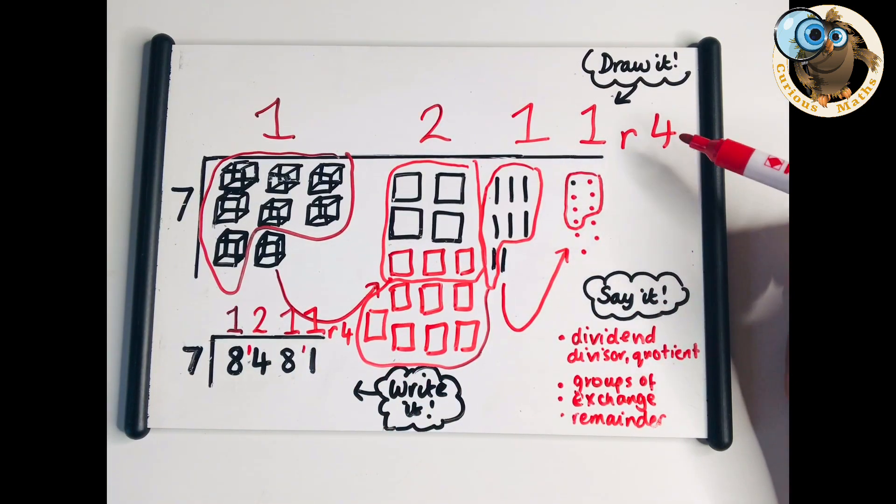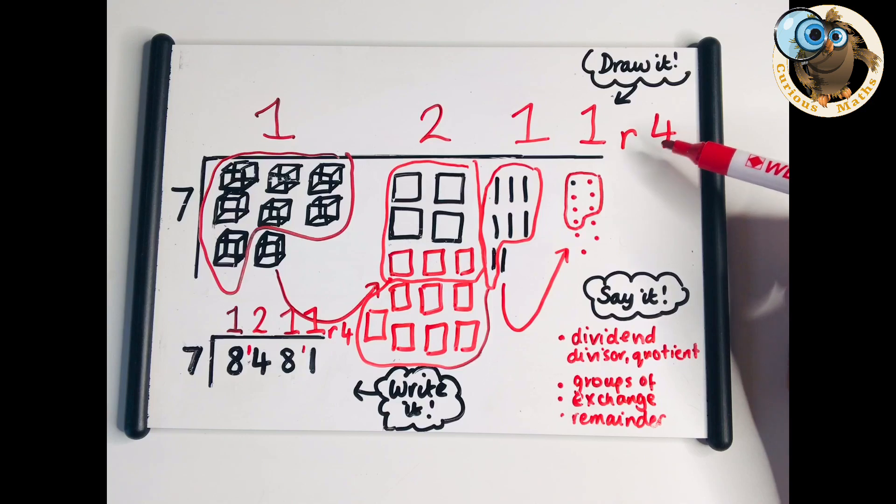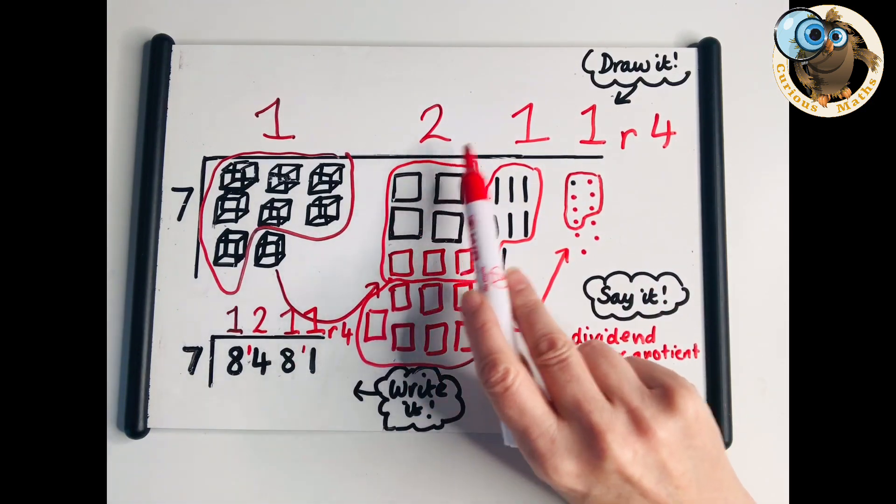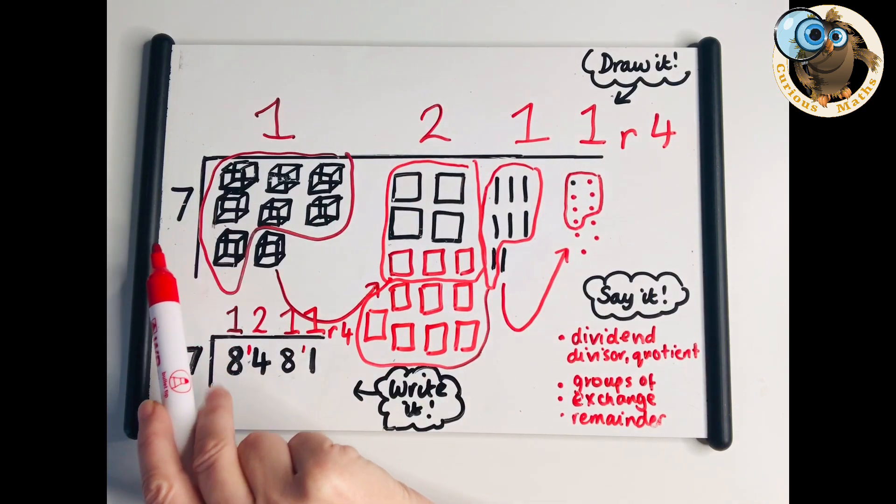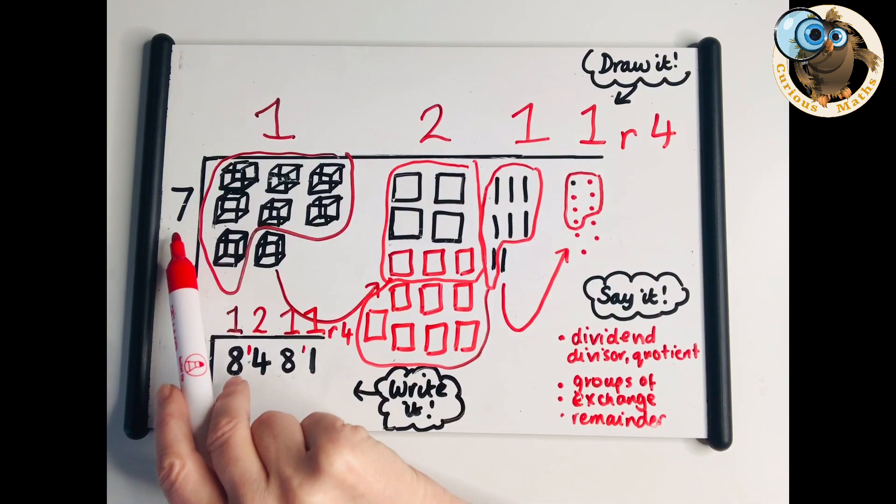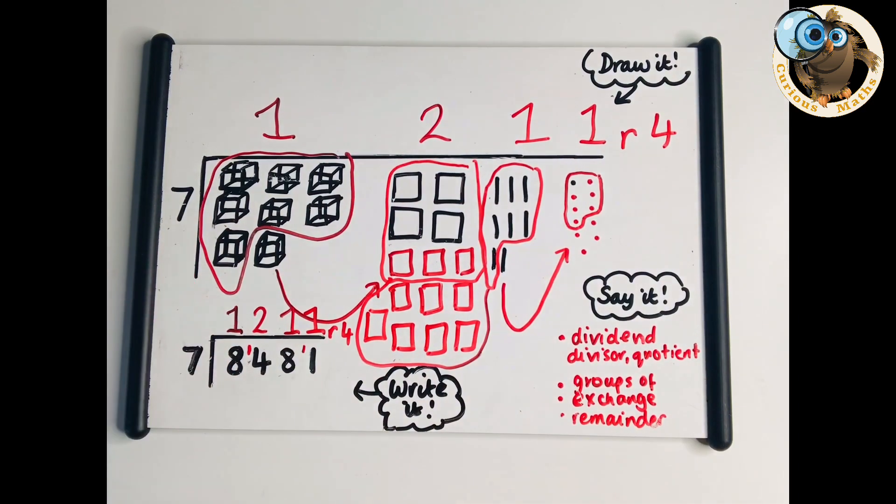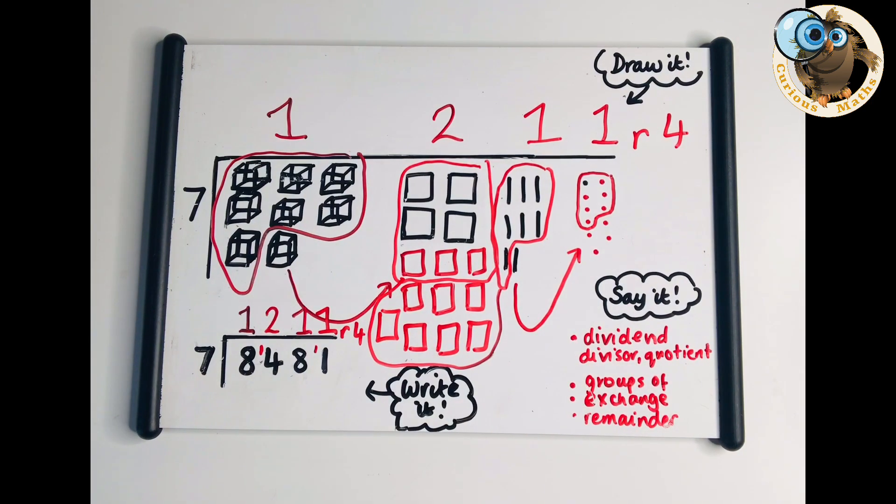So in Year 5 they have to show a remainder. If they were asked to represent it as a fraction remainder, it would be one thousand two hundred and eleven and four sevenths. Our denominator in our fraction remainder is always our divisor.